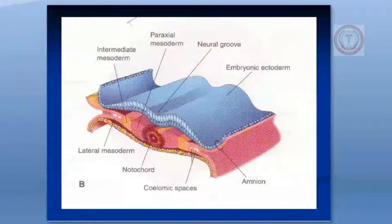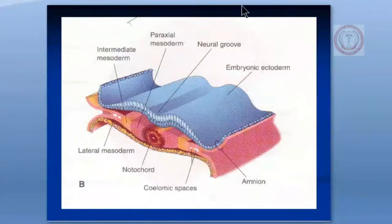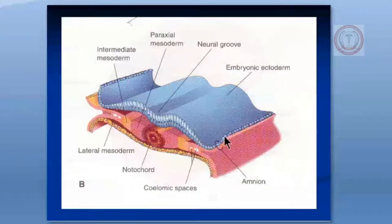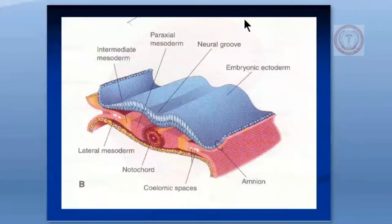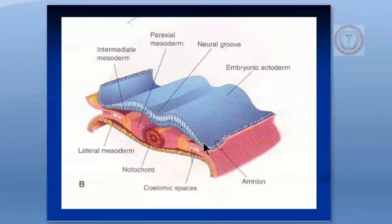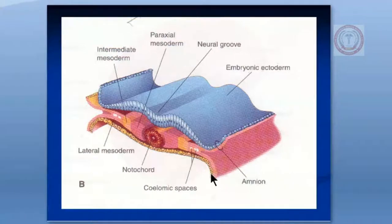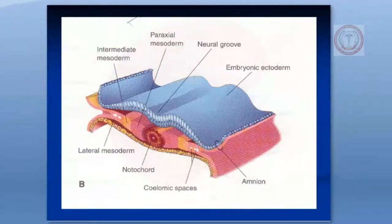The intermediate mesoderm is shown here. In the cervical region this is the pronephros, then this is the mesonephros area, and here the metanephros will form. In the cervical region the pronephros formation occurs — this is the non-functional kidney system formed in the fourth week and it will disappear by the end of the fourth week. The mesonephric system is formed by the segmented and unsegmented intermediate mesoderm.